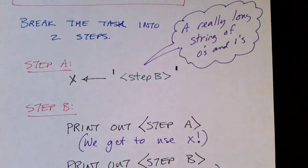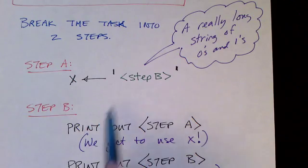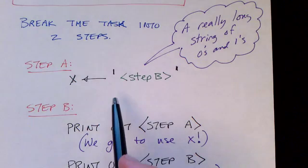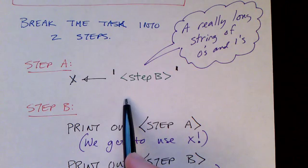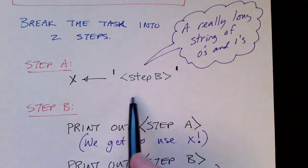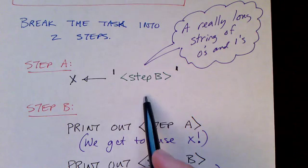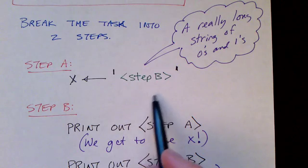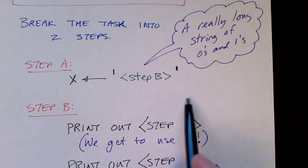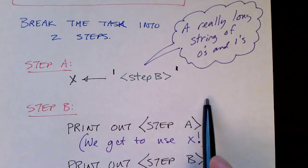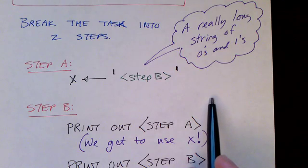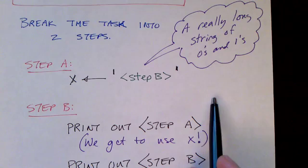Our Turing machine will have two phases or two parts. Step A will execute — there'll be a bunch of states — and then at some point it'll take a transition to the second phase, where there'll be a bunch of states as well. We'll execute step B, and then it will terminate.